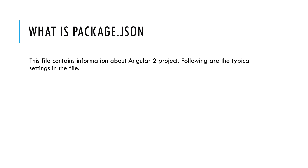What is package.json? This file contains information about an Angular project. Typical settings include what packages are installed, the different versions of those packages, TypeScript information, and Angular information. NPM uses this information to identify and install the corresponding packages for the current application.